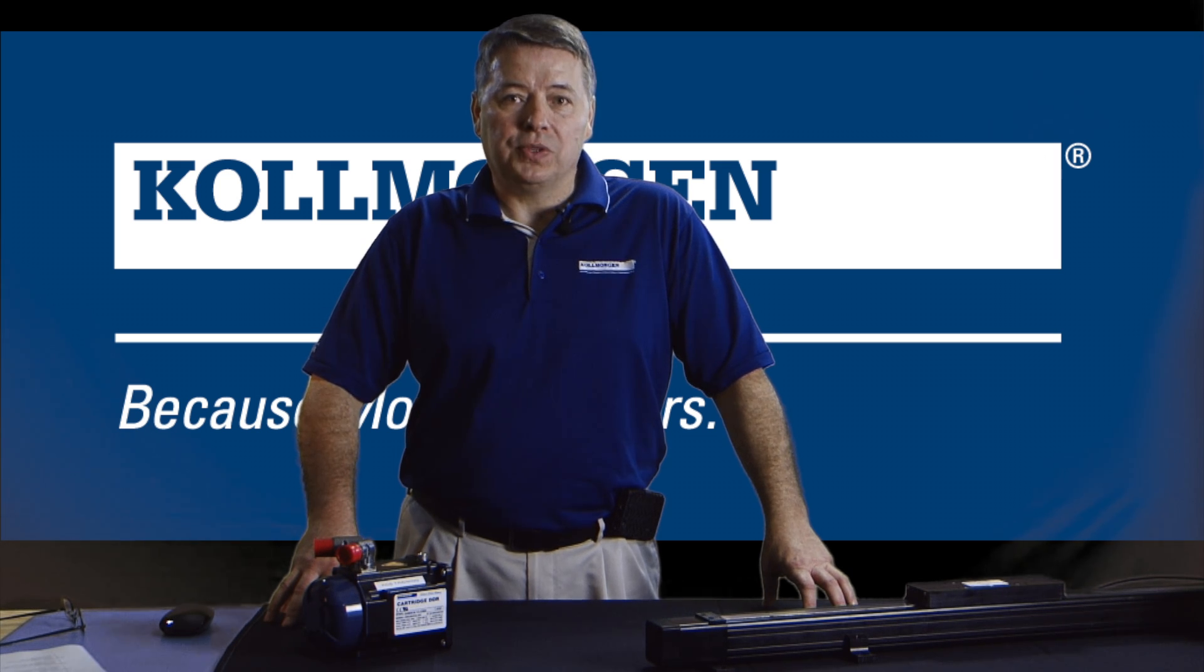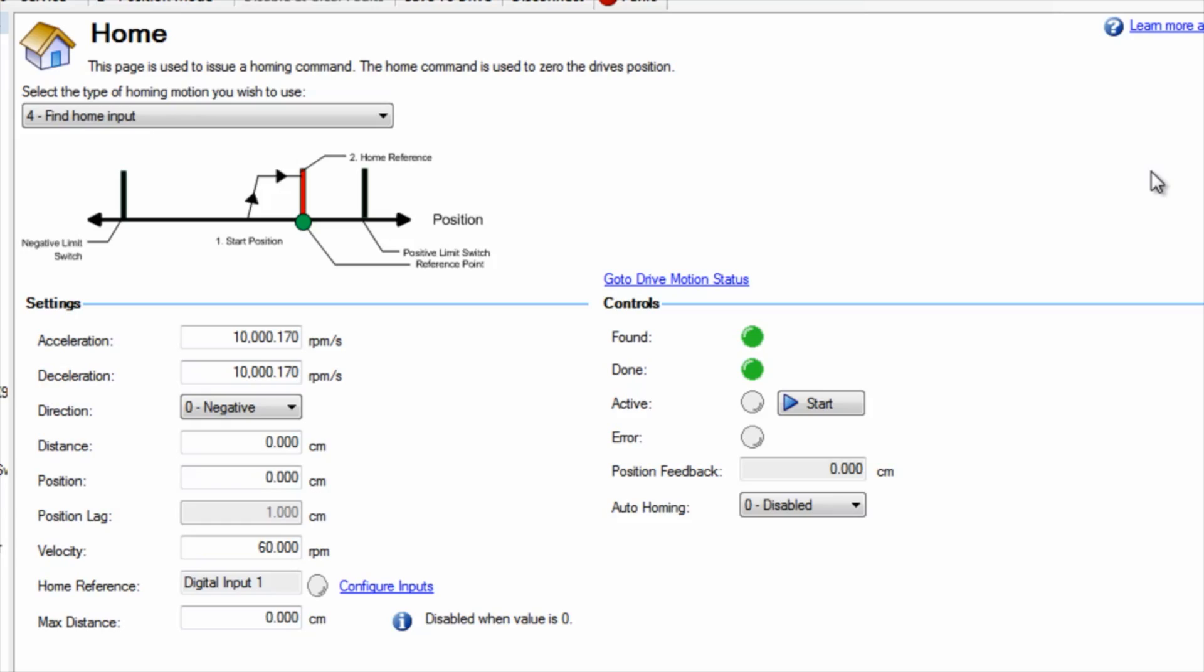There are two possible scenarios that can be observed. Our example is for the linear actuator with the positive and negative travel limits. We are homing the system in the negative direction using home type 4. Home types 5 and 6 will be explained later.